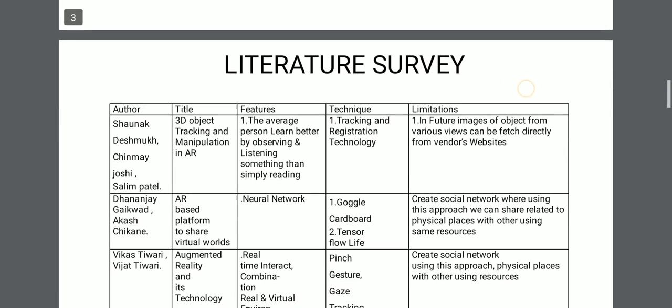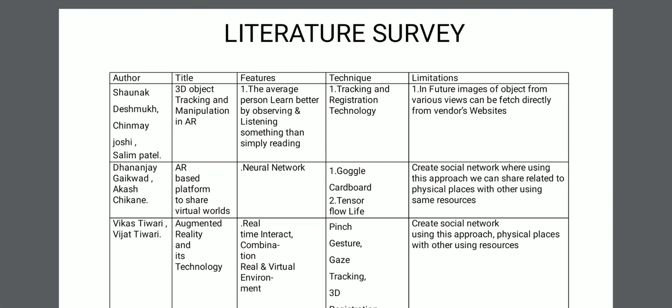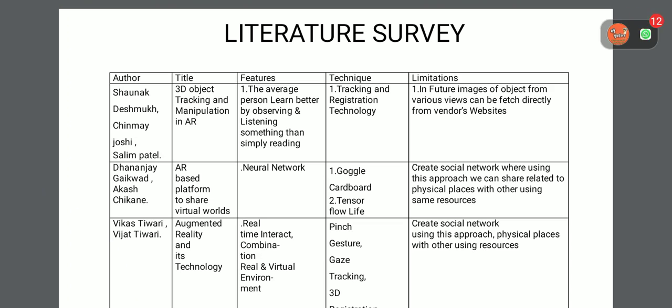First paper in the Literature Survey: Authors are Adhar, Shonak, Deshmukh, Chinmay Joshi, and Salim Patil. Title is '3D Object Tracking and Manipulation in AR.' Feature: the average person learns better by observing and listening to something than simply reading. Technique: Tracking and Registration Technology. Limitation: images of objects from various views can be fetched directly from vendors' websites.